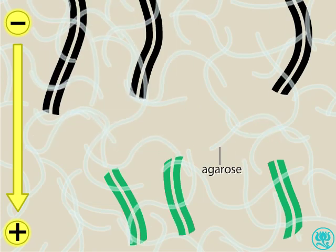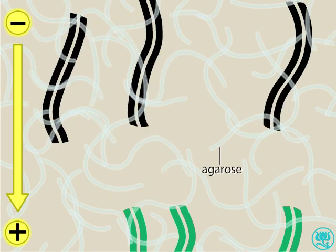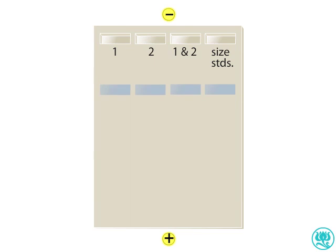The smallest fragments move the fastest, being entangled less in the agarose matrix of the gel. When the blue dye reaches the bottom of the gel, the power is turned off.